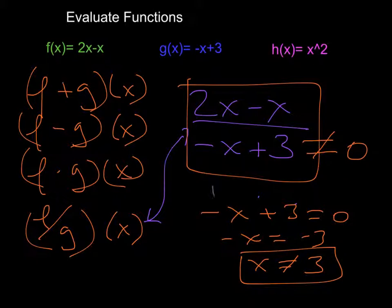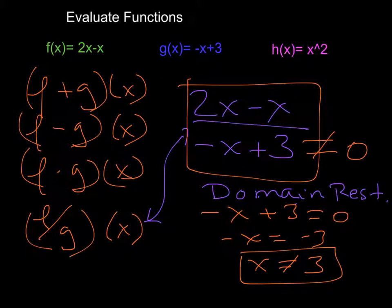Whenever you have a denominator, there are two domain restriction conditions to look for: denominators cannot equal 0, and if we're working in the real numbers — which we are for functions — we cannot have a negative number under a radical sign. So if you ever see those two conditions, that's what we're talking about with domain restrictions.